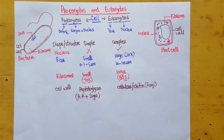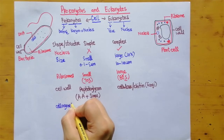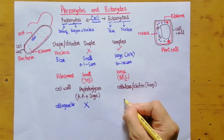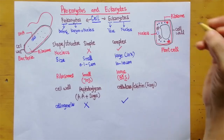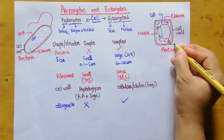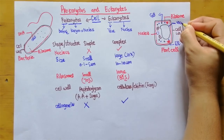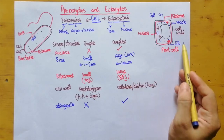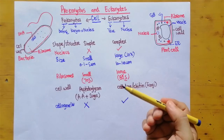Then come cell organelles. In prokaryotes, no membrane-bounded organelles are present. But in eukaryotes, organelles have a cell membrane around them — for example, Golgi bodies, endoplasmic reticulum, and vesicles all have cell membranes. So eukaryotes have membrane-bounded organelles, while prokaryotes do not.